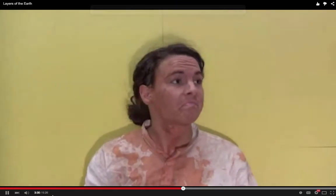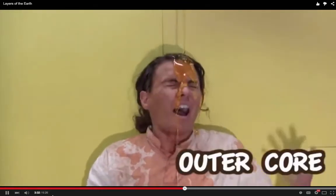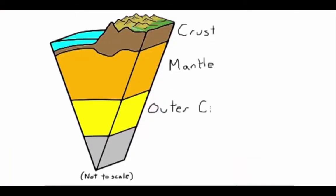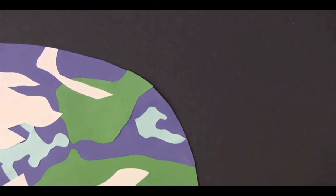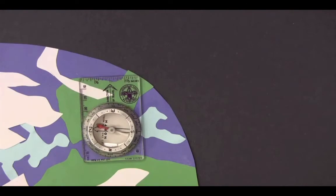Now let's learn about the outer core in more detail. The outer core is a 1,400-mile-thick liquid layer made mostly of iron, so it's really heavy. Temperatures here range from 7,900 degrees Fahrenheit in the outer regions to 11,000 degrees Fahrenheit near the inner core. Without the outer core, life on Earth would be very different — the movement of liquid metals in the outer core creates Earth's magnetic field, which allows us to use a compass.